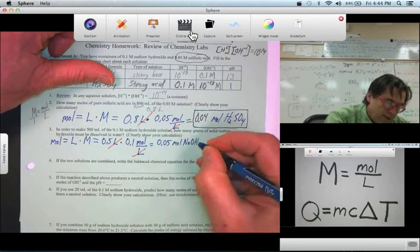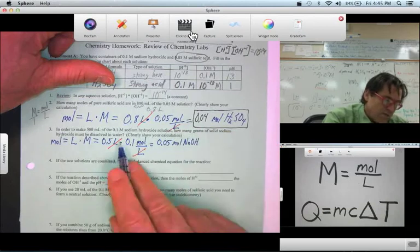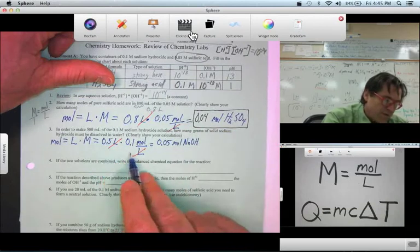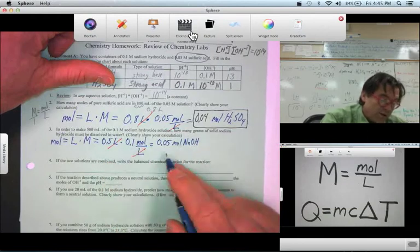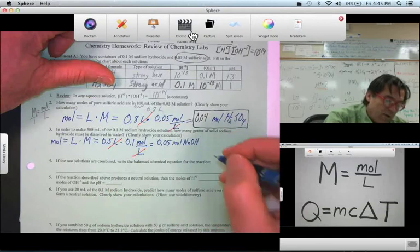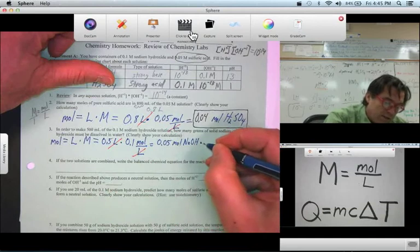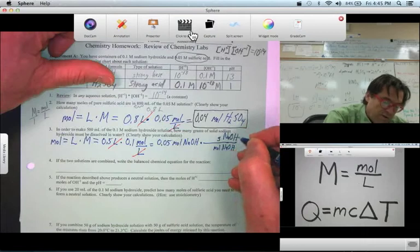NaOH, that's how much we need dissolved in water to make 500 mils of 0.1 molar. So we need that many moles of NaOH. How many grams though? Well, let's convert this out of moles of NaOH into grams of NaOH.